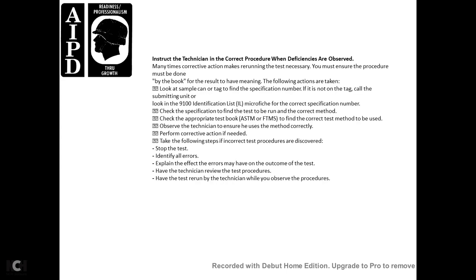Instructions for correcting procedural deficiencies: many types of corrective actions may involve re-running the test. Ensure the procedure is done by the book for results to be meaningful. Look at the sample can or tag to find the specific number. If not on the tag, call the submitting unit to locate the correct specification number. Check the specification to find the test to be run, then check the appropriate test book — ASTM or federal test methods.